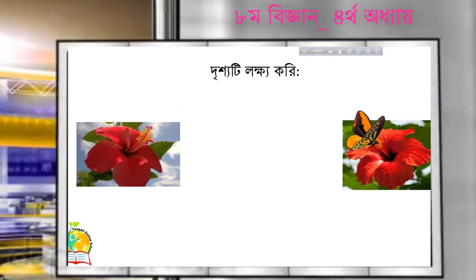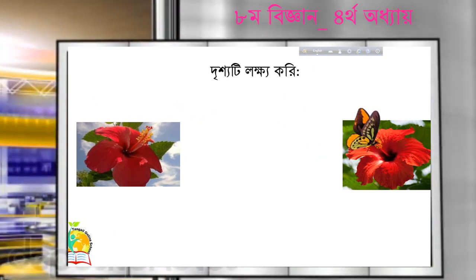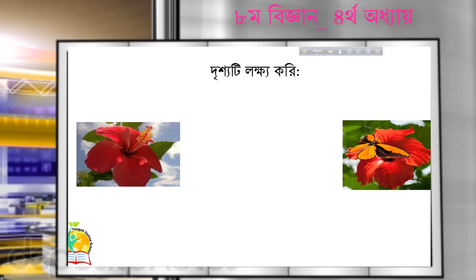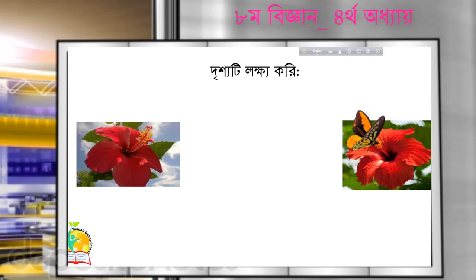You will find one flower, and the flower will be in the same place. That is a flower in the same place. This is the third class, and the third class is the same as the third class.